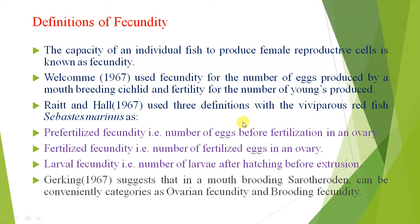Hall also used three definitions with the viviparous redfish Sebastes marinus: pre-fertilized, fertilized, and larval fecundity. Pre-fertilized means number of eggs before fertilization in an ovary; fertilized means number of fertilized eggs in an ovary; larval fecundity means number of larvae after hatching before extrusion.